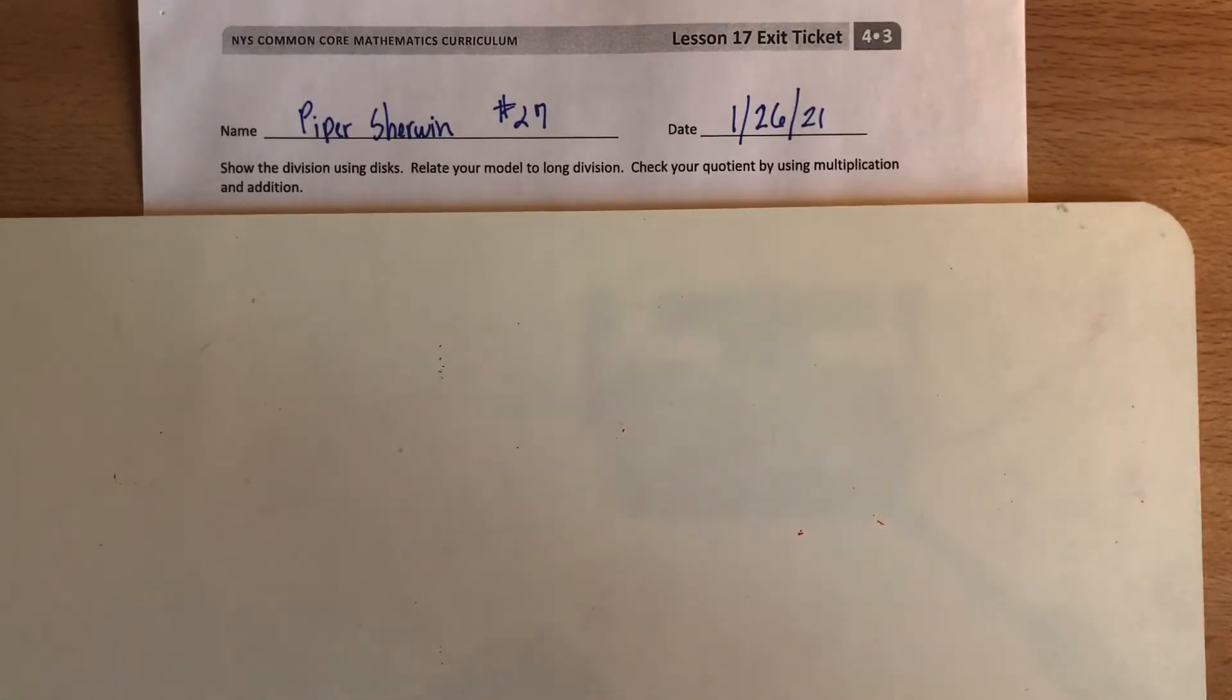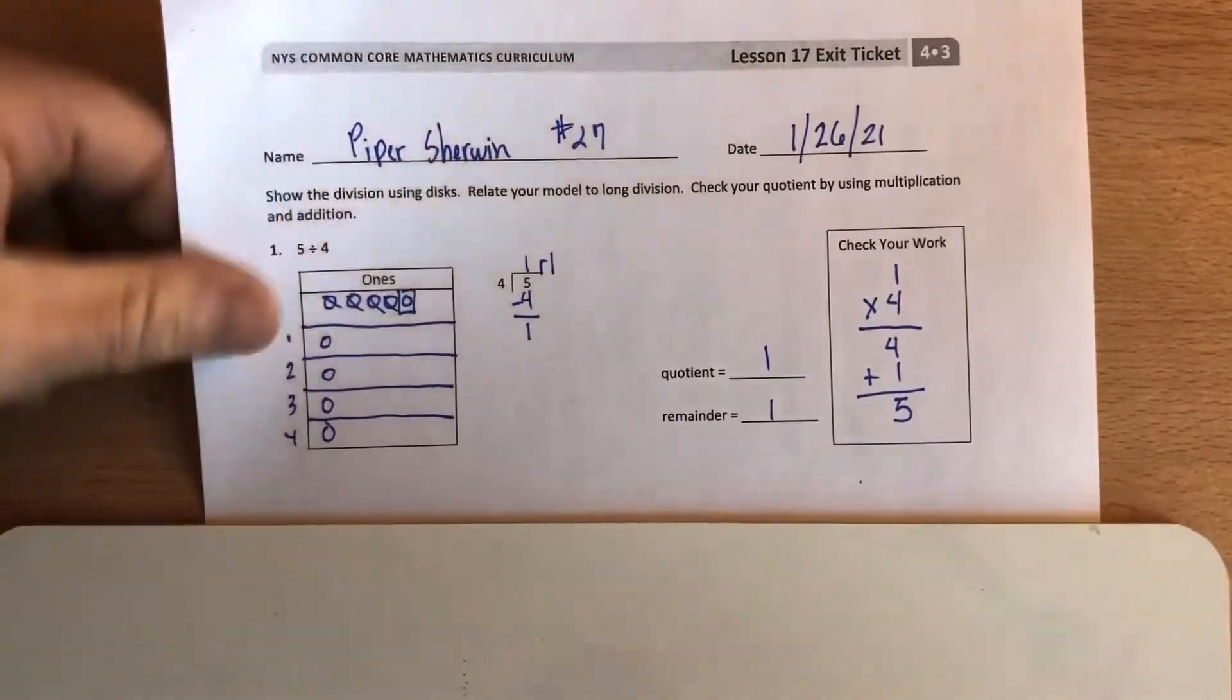We're gonna show the division using discs, relate your model to long division, and check your quotient by using multiplication and addition. Let's check it out. First one's been done. First one is here, I just did it, it hasn't been done for us.